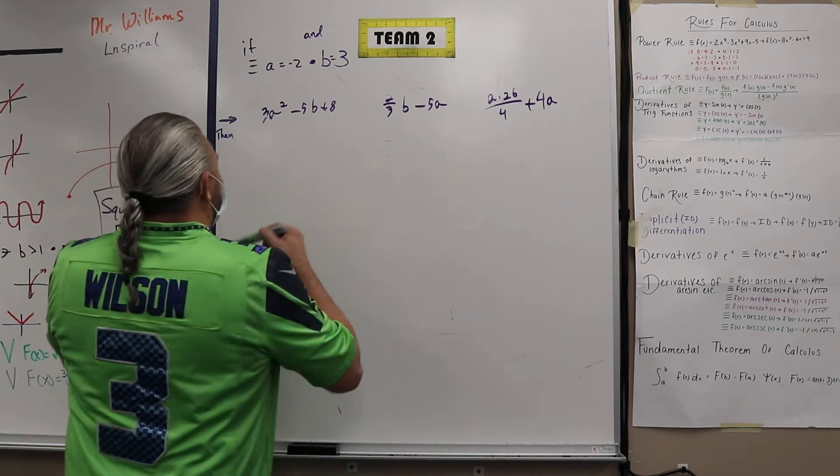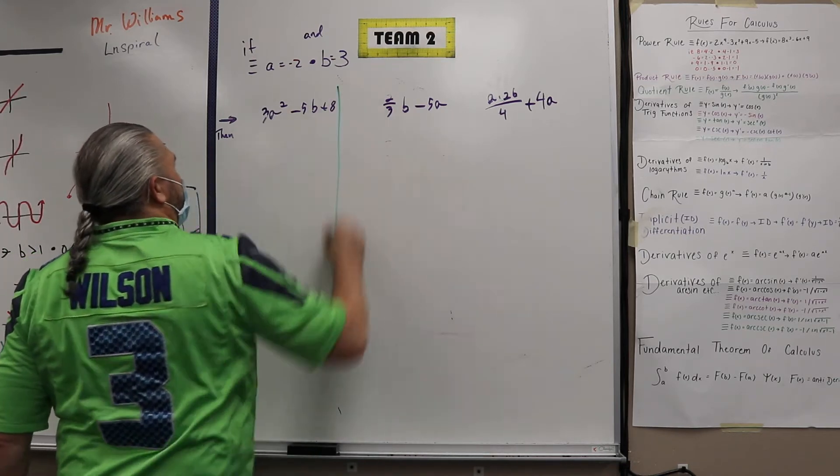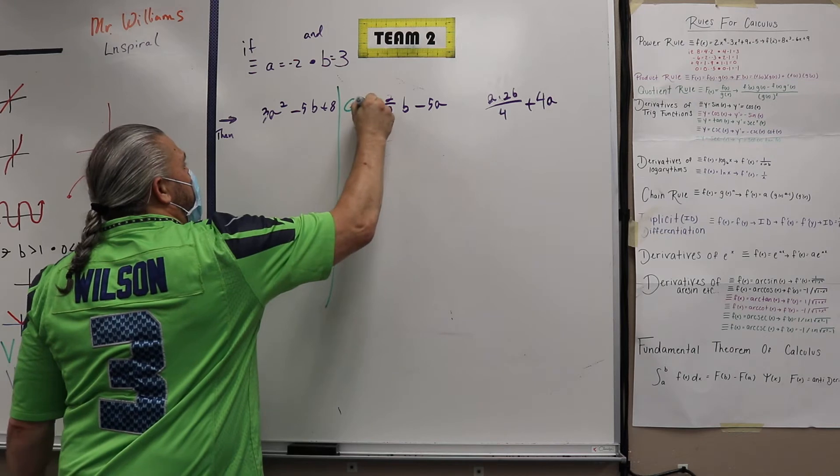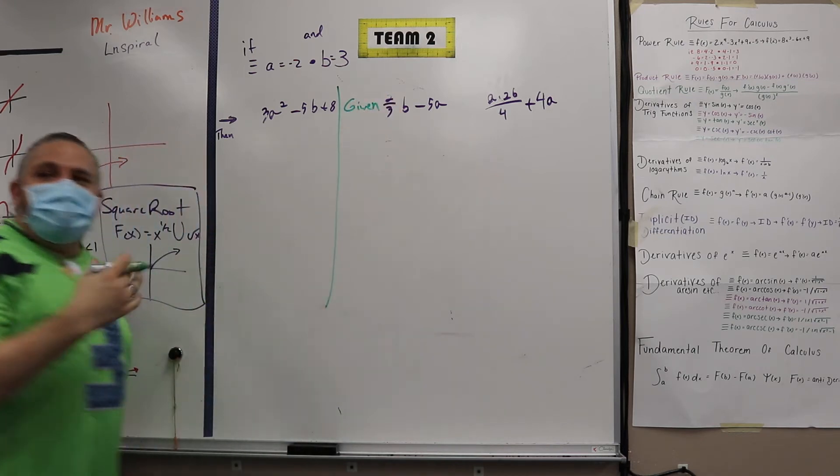So what you do is two column proof, right? Given - they gave you this.